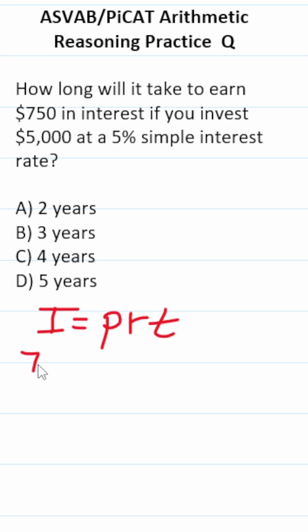In this case, we're told we want to earn $750 in interest. We invest $5,000, that's our principal, at an interest rate of 5%, which is 0.05 in decimal form. We want to know how long, or how much time t, that's going to take.